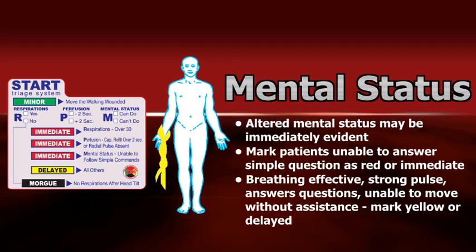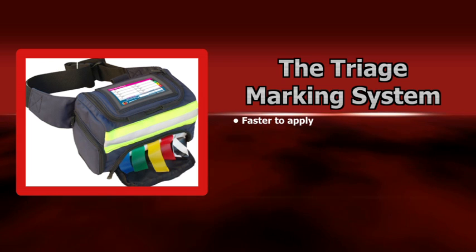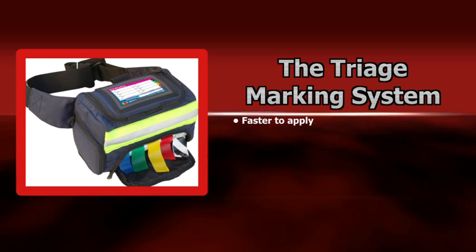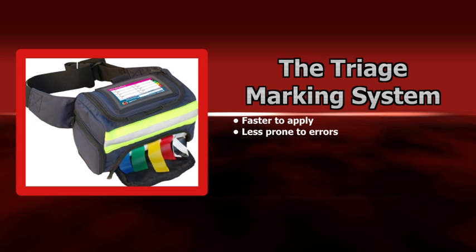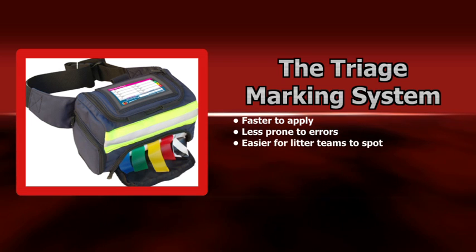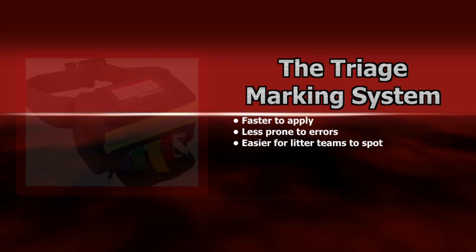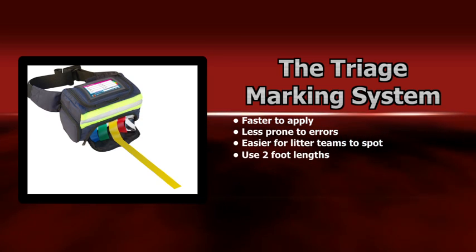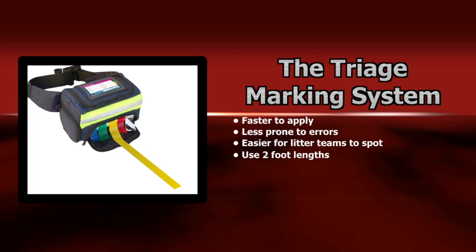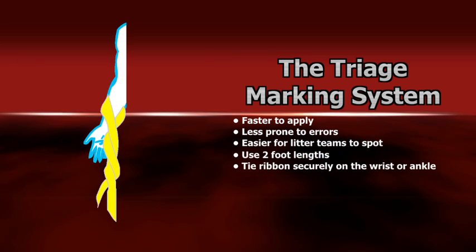This is the ribbon method for marking patient acuity levels during primary triage. Ribbons or flagging tape have proven to be faster to apply, less prone to errors, and have a higher level of visibility than other methods. After performing START to determine the patient's category, pull out and tear off approximately 2 feet of tape of the appropriate color from the dispenser. Using a standard knot, comfortably tie the ribbon section around one of the patient's uninjured extremities.